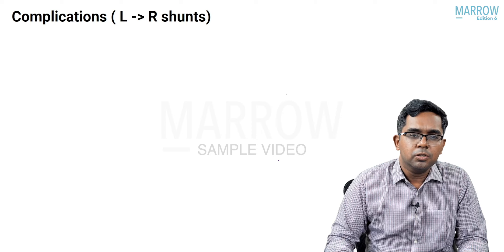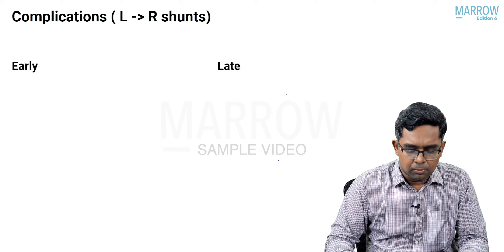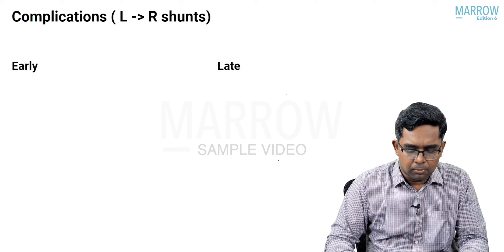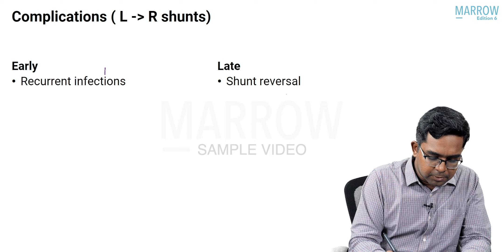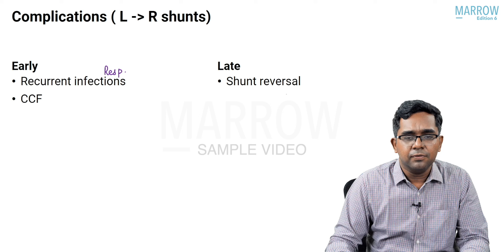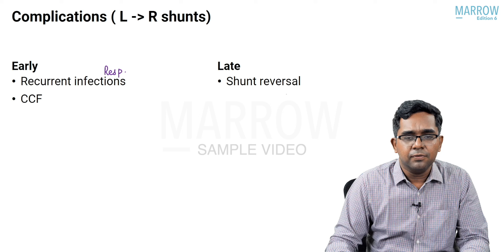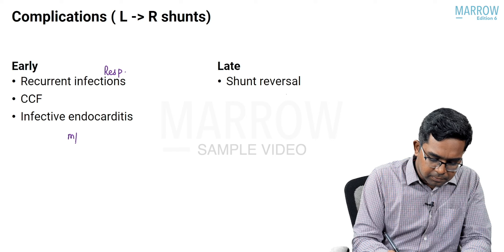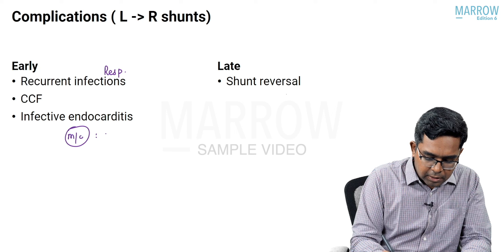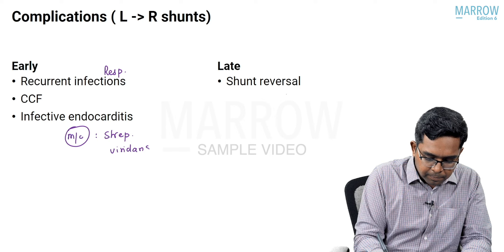Complications of left-to-right shunts are divided into early and late. Early complications, occurring in the first few months or years of life, include: recurrent respiratory infections due to pulmonary congestion, congestive cardiac failure due to congestion inside the heart, and infective endocarditis. The most common organism associated with infective endocarditis in children is Streptococcus viridans.